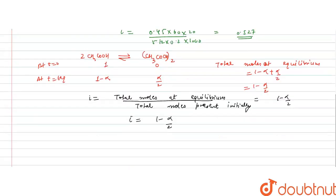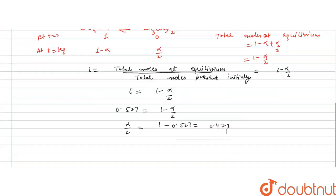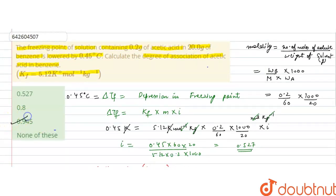We have to calculate alpha, the degree of association. With i equal to 0.527, we get 0.527 equals 1 minus alpha by 2. So alpha by 2 equals 1 minus 0.527, which is 0.473. Therefore alpha equals 0.473 into 2, that is 0.946. The degree of association of acetic acid is 0.946. The correct answer is 0.945, which is close to our answer. So C is the correct answer.